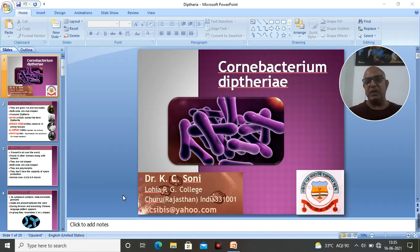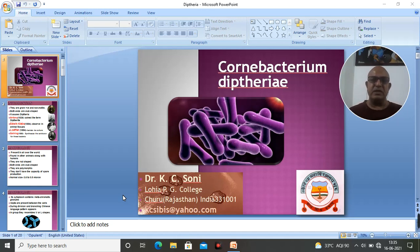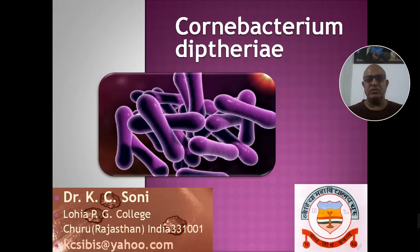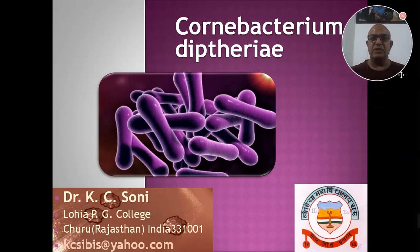इस chapter में gram positive और gram negative bacteria हैं — gram positive में cocci type और bacillus type के bacteria, इसी तरह gram negative में भी। इन bacteria से कौन-कौन सी diseases फैलती हैं, जो most common diseases humans में पाई जाती हैं, इन पर focus करते हुए यह special series मैं share करने जा रहा हूँ। आज का पहला व्याख्यान Corynebacterium diphtheriae पर focus रहेगा।